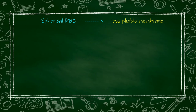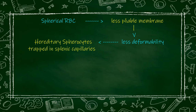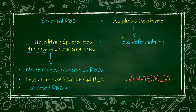Spherical RBCs have less flexible membranes and cannot easily pass through the spleen's capillaries. Due to less deformability, when they try to pass through the spleen's capillaries, instead of passing through, they get trapped. The spleen is a very rich organ in terms of macrophages. The macrophages in the spleen ingest these trapped spherical RBCs.